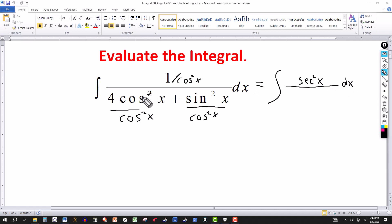And so here cosine squared of x and cosine squared of x, so let's divide out. I get 4 and sine squared of x over cosine squared of x. That's your tangent. And both of those are squared. So this will be tangent squared of x.